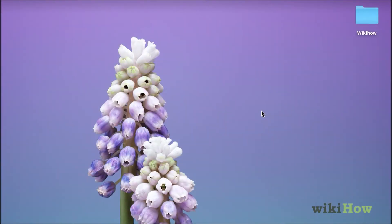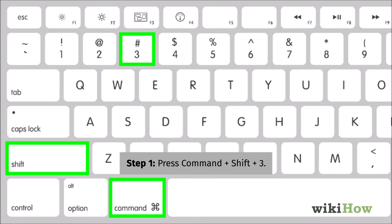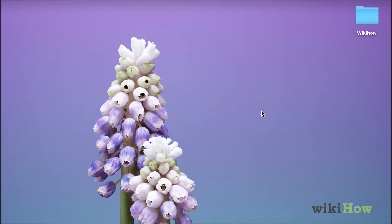To take a screenshot of the whole screen of a MacBook, press the Command key, the Shift key, and the number 3 key at the same time. You'll find your screenshot file on the desktop.